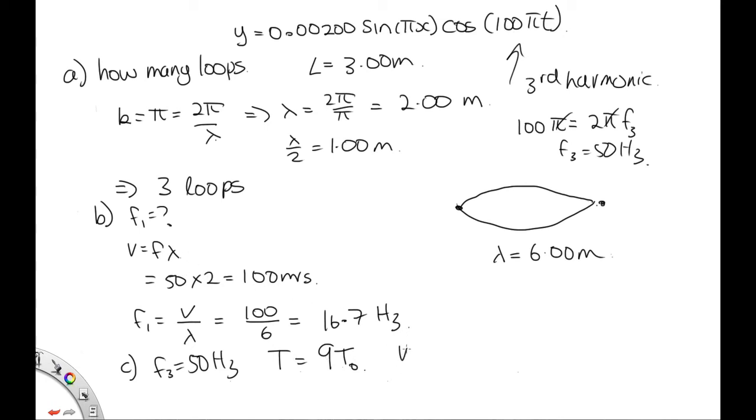So the velocity is equal to the square root of the tension over mu. So the new velocity will be the square root of 9 times the original tension over the original mu. And the original tension over mu, we worked out the velocity up here, was 100 meters per second. So this will be 3, because that's the square root of 9, times 100 meters per second, or 300 meters per second.